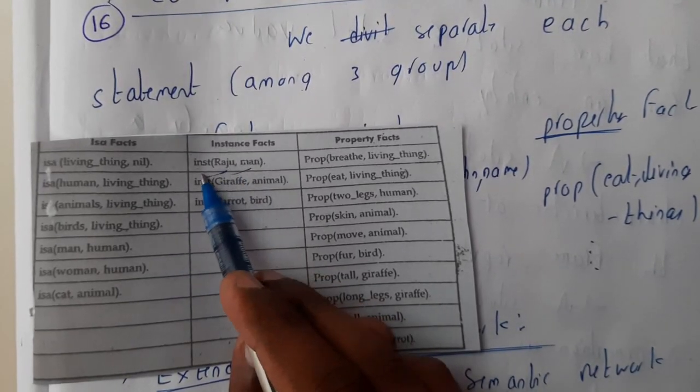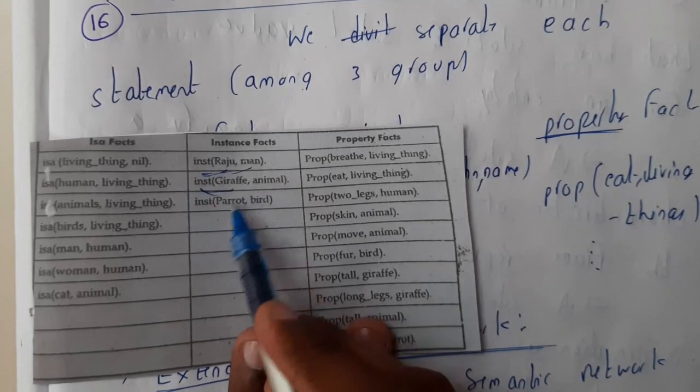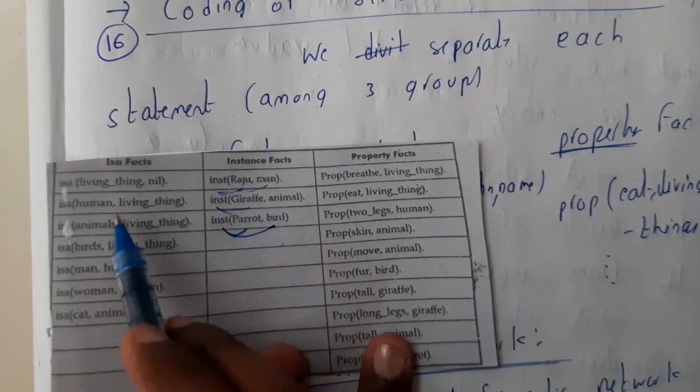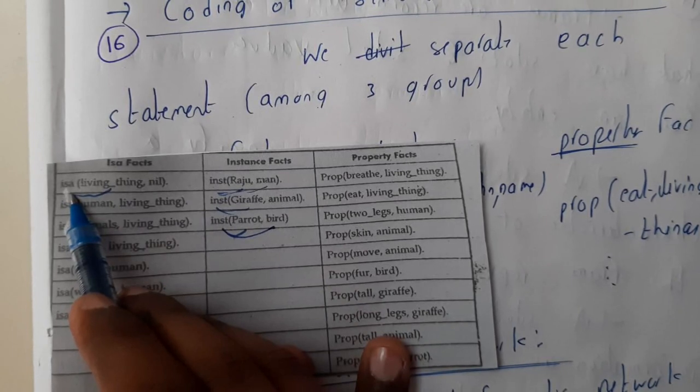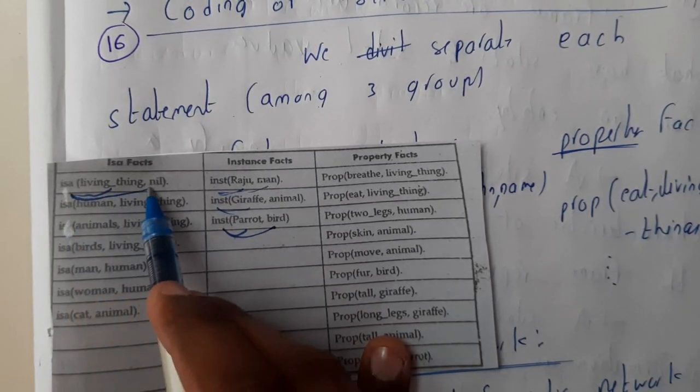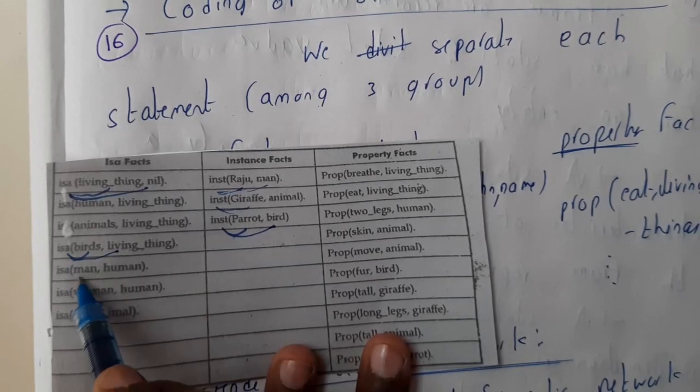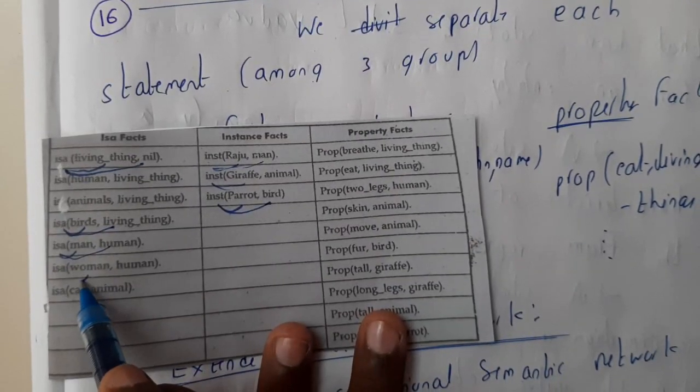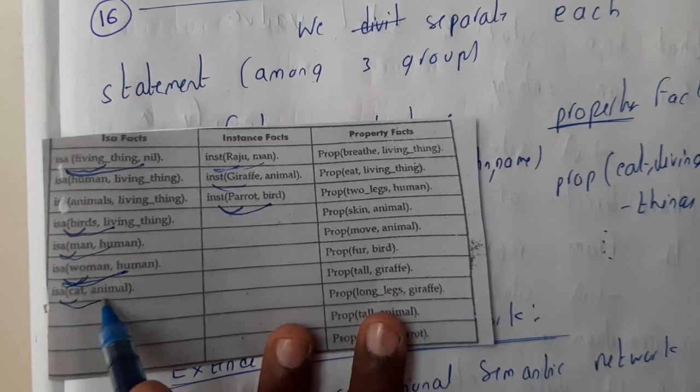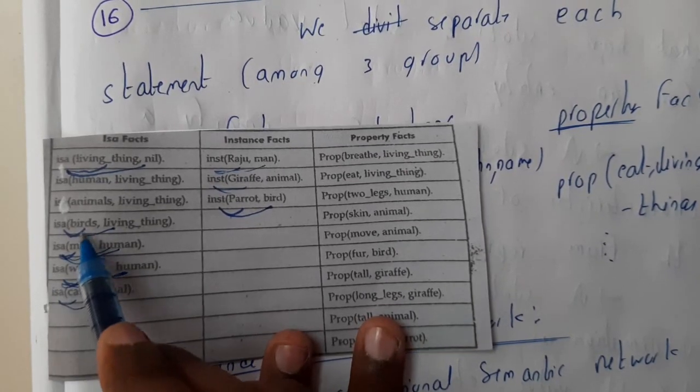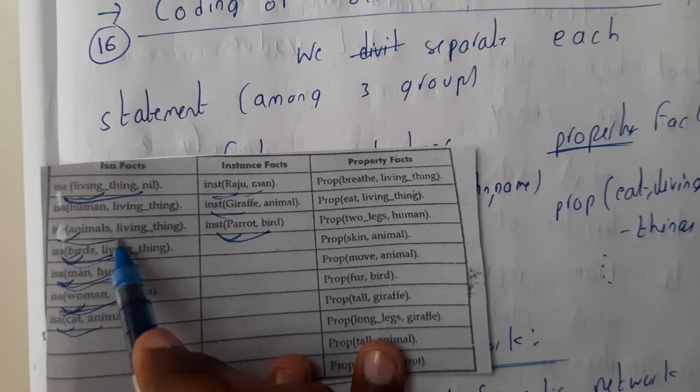Raju instances man, giraffe instances animal, parrot instances bird. Living thing instance is nil. Similarly, bird instance is living thing, man instance is human, woman is human, cat is an animal, man is a human, bird is a living thing, animal is a living thing.